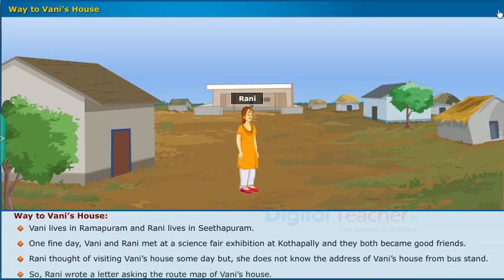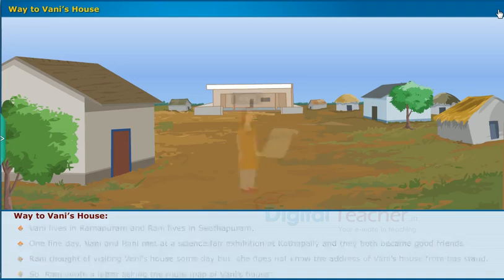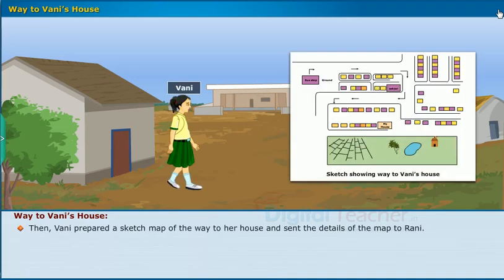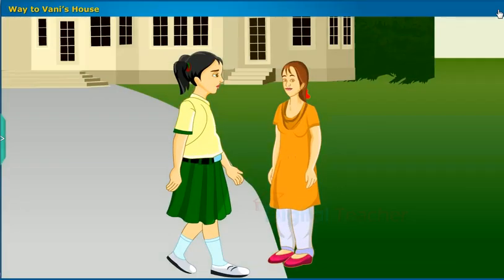Rani thought of visiting Vani's house someday, but she did not know the address from the bus stand. So Rani wrote a letter asking for the route map to Vani's house. Vani then prepared a sketch map of the way to her house and sent the details to Rani. Now let us go through their conversation after Rani reaches Vani's house.